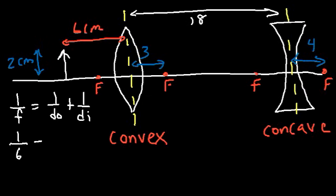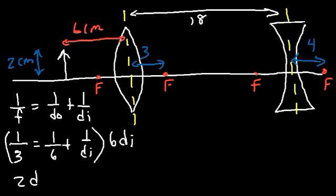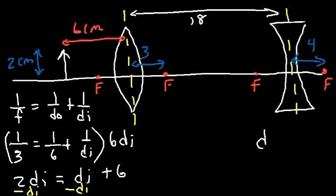Let's plug in the values for the convergent lens. The focal length is 3, DO is 6, and we're looking for DI. To solve it, we're going to multiply both sides by the common denominator, which is 6·DI, to eliminate all fractions. 6·DI times 1/3 equals 2·DI. 1/6 times 6·DI, the sixth cancels, so we get DI. 1/DI times 6·DI, DI cancels, so we get plus 6. Now we can subtract both sides by DI, and therefore DI is equal to positive 6.